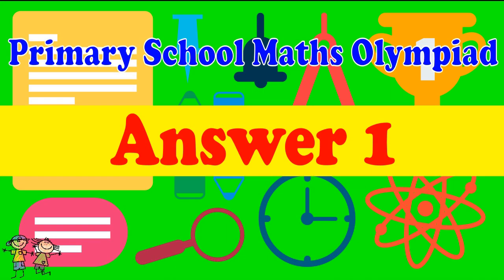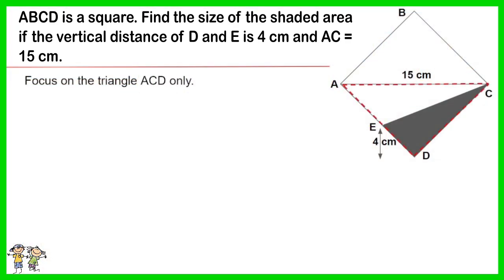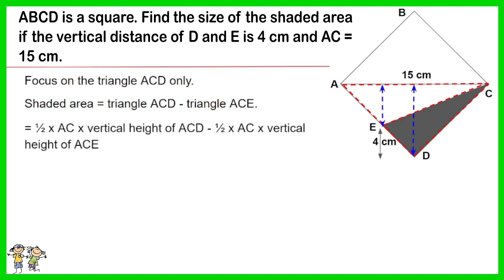Answer for question 1: Focus on the triangle ACD only. Shaded area equals triangle ACD minus triangle ACE, which equals half times AC times vertical height of ACD minus half times AC times vertical height of ACE.